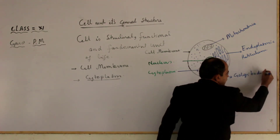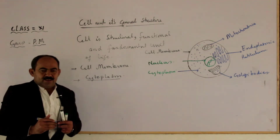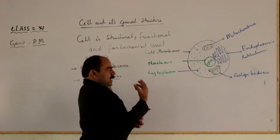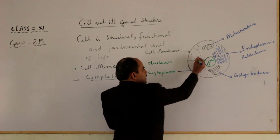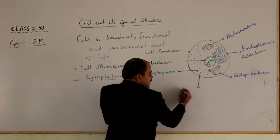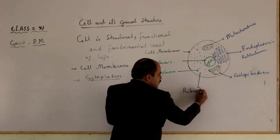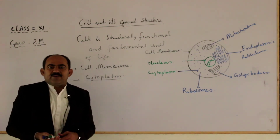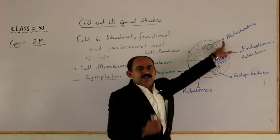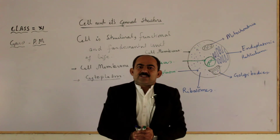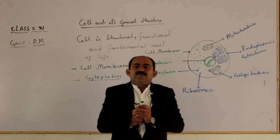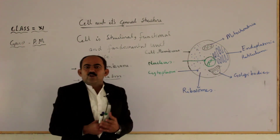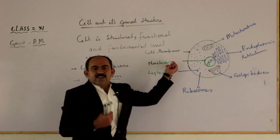Golgi bodies, also known as the Golgi complex, are basic structures inside the cell. We also have ribosomes — a dotted structure seen throughout the cytoplasm — which are present within the cell body and perform different functions. The mitochondria is the powerhouse of the cell, responsible for providing energy in the form of ATP through the process of cellular respiration, also called aerobic respiration.